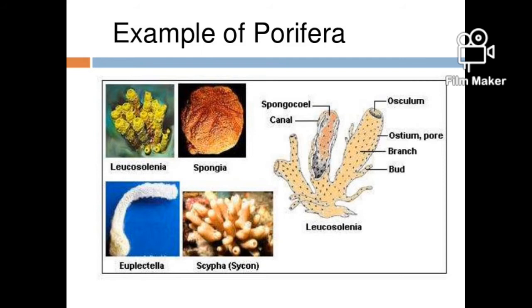They have spicules which prevent predators from getting inside their body. They can grow from 1 cm to 10 feet. To protect from predators, they can change their color and also release chemical gases. They have a water canal system for nutrition and oxygen. Examples of these sponges are Sycon, Spongilla, and Euplectella.